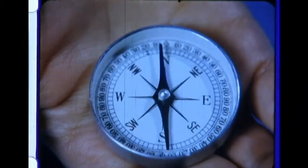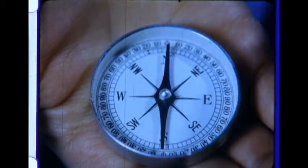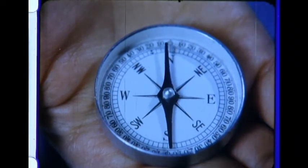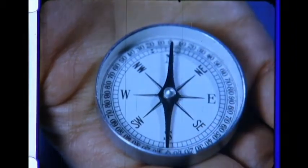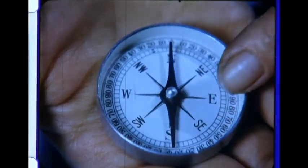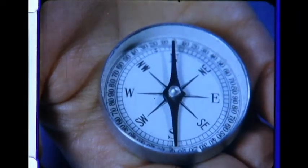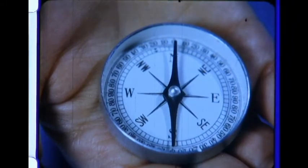Now we can read all the directions. The compass dial is pointing north, just as the pointer is. So the opposite direction is south. To the right is east. To the left is west. So finding directions is one important way we use a magnet.